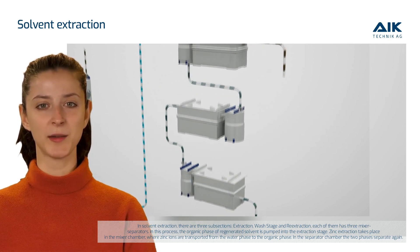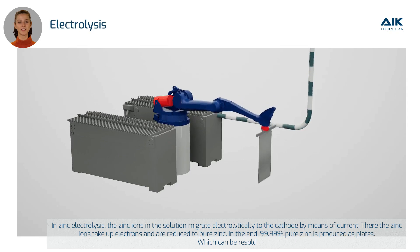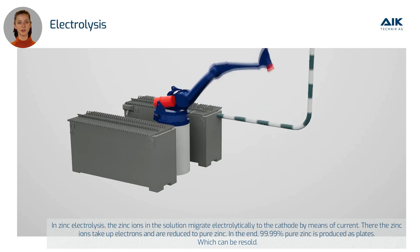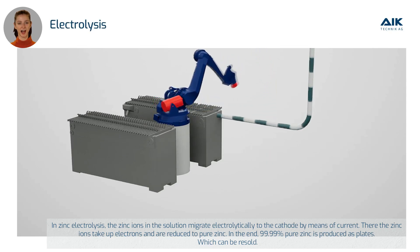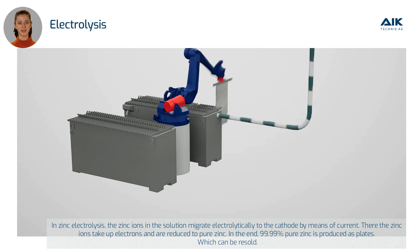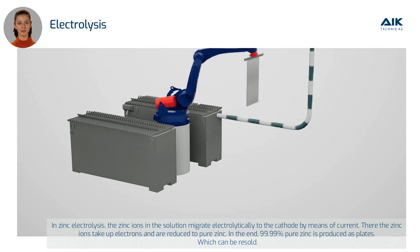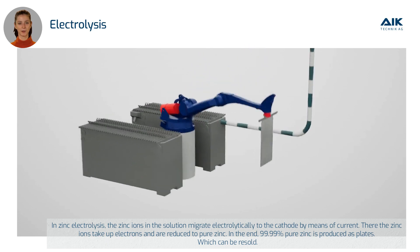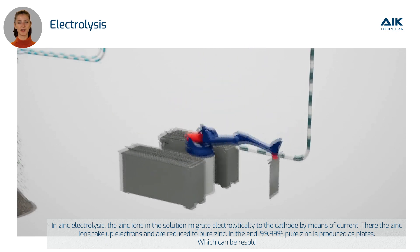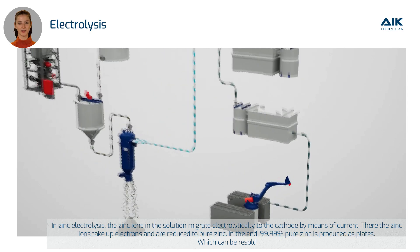In zinc electrolysis, the zinc ions in the solution migrate electrolytically to the cathode by means of current. Then the zinc ions take up electrons and are reduced to pure zinc. In the end, 99.99% pure zinc is produced as plates, which can be resold.